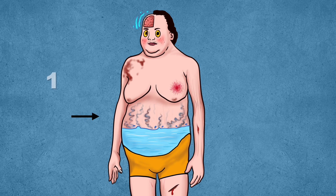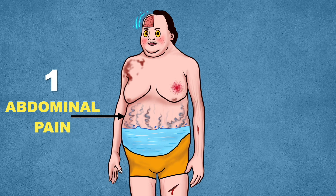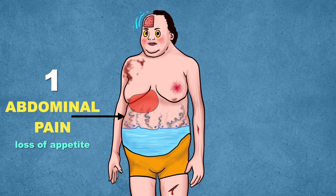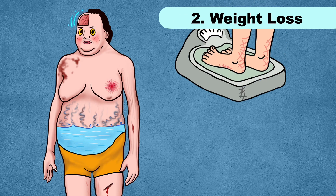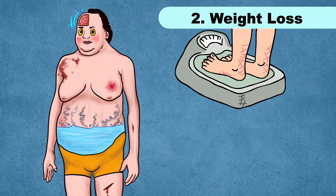A few people may experience very generalized symptoms like abdominal pain and loss of appetite. The pain is commonly felt in the upper right side of the abdomen. You should also check if you are losing weight without trying, though it could be due to many other reasons.